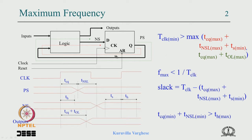In the first case our analysis is from one clock edge to the next clock edge. So if this is not satisfied you can increase the clock period or reduce the clock frequency to solve it. Whenever the slack is negative you can decrease the clock frequency or increase the clock period. But when there is a hold time violation you have to increase the combinational delay in the path or use some other technique.